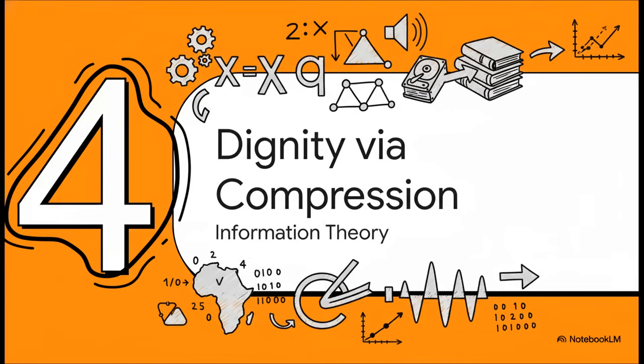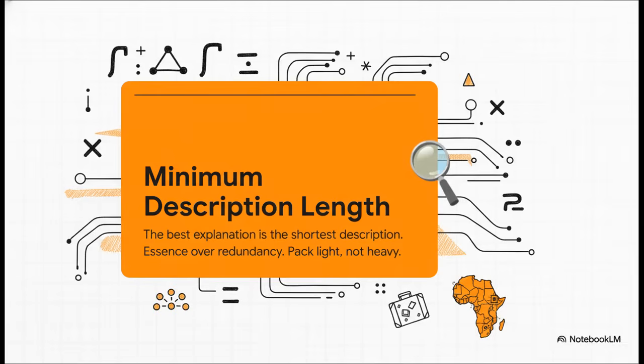Now let's move on to our fourth big idea. And it's a beautiful one. At its core, learning is a form of compression. Just think about it. The best, most elegant explanation for anything is almost always the one that can be stated in the shortest, most concise way. This concept is actually formalized in what's called the minimum description length principle. The idea is really simple. An AI's goal shouldn't just be to be accurate, but to be elegant. It needs to find the true essence of the data, to pack light, and throw away all the redundant heavy baggage.